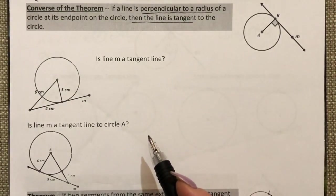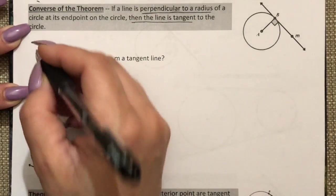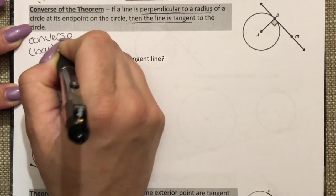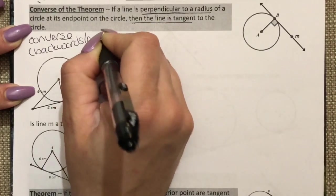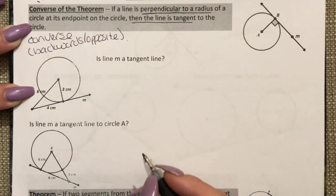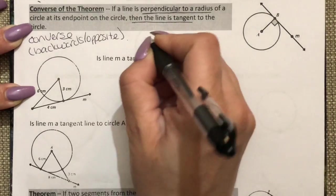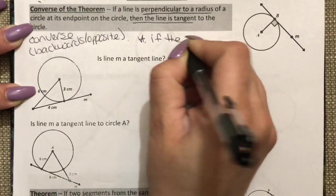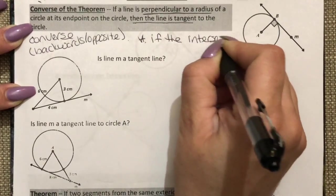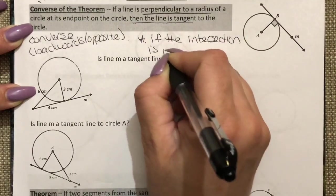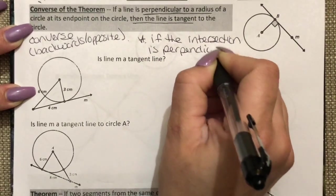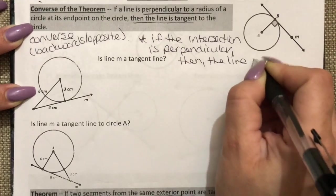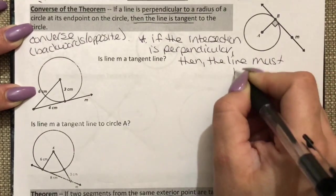So it's proving the exact backwards of what we were just doing. Converse again is like saying the backwards or opposite version. And again what we're trying to say is that if the intersection is perpendicular then the line must be tangent.